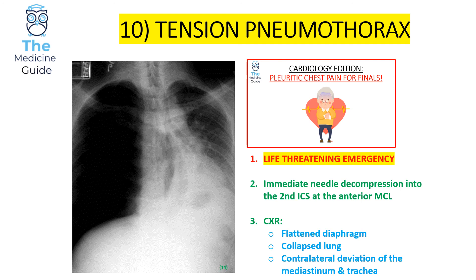Later when the patient is stable you can perform a chest x-ray. On the chest x-ray, a tension pneumothorax presents with a flattened diaphragm and a collapsed lung, but the key finding is contralateral deviation of the mediastinum and trachea. On this chest x-ray the mediastinum and trachea are deviated to the left because the tension pneumothorax is affecting the right lung — a right-sided tension pneumothorax causing contralateral displacement to the left.